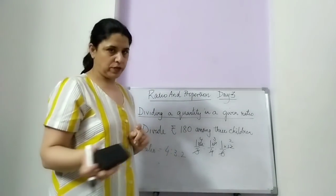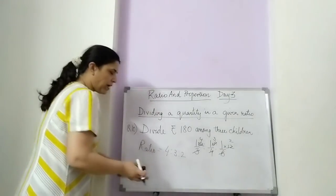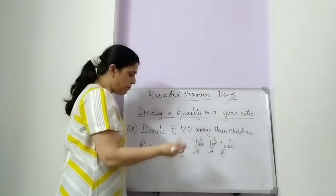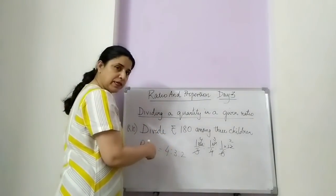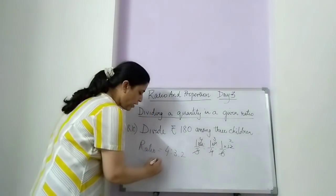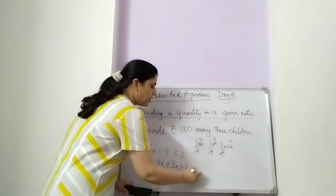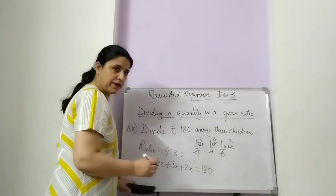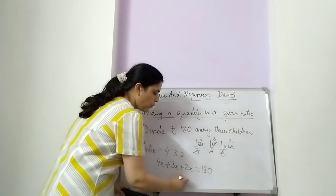Now there are two ways of doing this question — dividing a given quantity in a given ratio. The first is: as we simplify by dividing by a common number, the same way we can multiply by the same number, let it be x. So the first child's share is 4x, the second child's share is 3x, and the third child's share is 2x. So we can do 4x plus 3x plus 2x, and they sum up to 180. This is the first method. 4 plus 3 is 7, plus 2 is 9, so 9x is equal to 180.